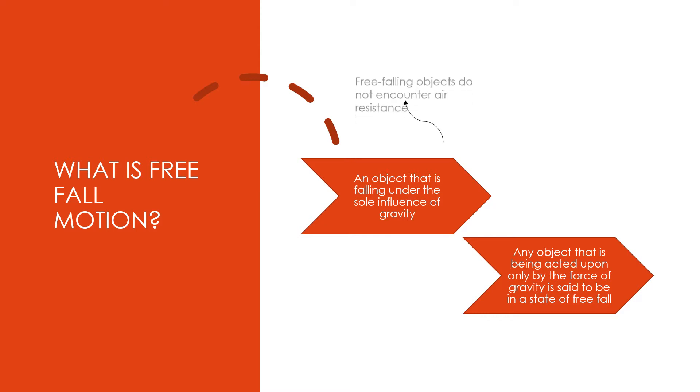There are two important motion characteristics that are true of freefall motion. First, freefalling objects do not encounter air resistance. Second, all freefalling objects on Earth accelerate downwards at a rate of 9.81 meters per second squared.